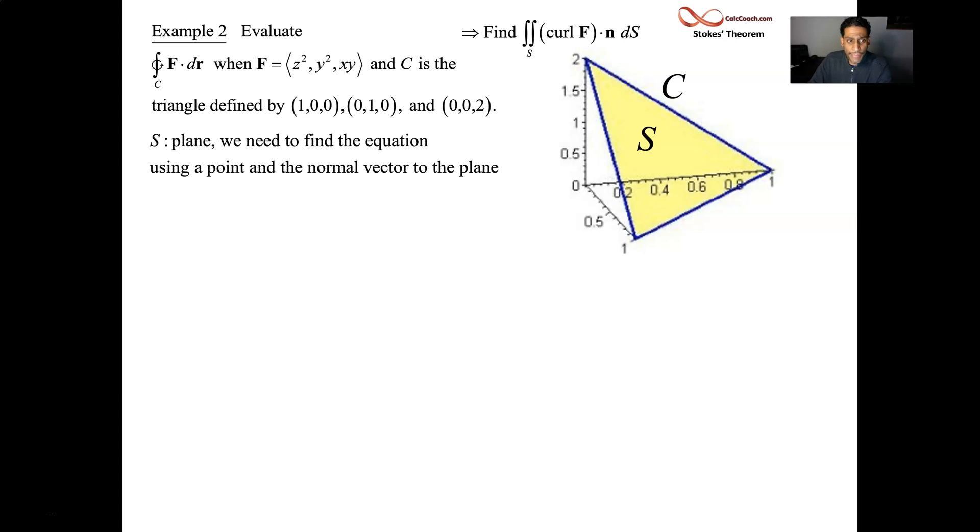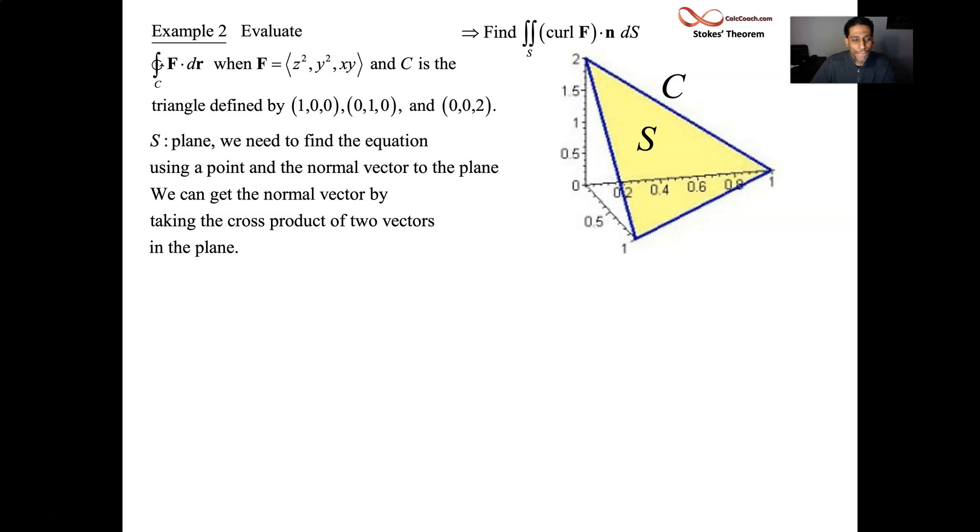So S is our plane. We need to find the equation of that plane. There's a long way and there's a short way. Here comes the long way. So you get two vectors that are in the plane. You cross them, you get the normal vector to the plane. So what are two vectors that are in this plane? Pick one point as your anchor and then go to the other two points. And so if I pick (1,0,0) as my anchor, the 1 on the x-axis, I go to the 2 on the z-axis, I go to the 1 on the y-axis. I get my two vectors.